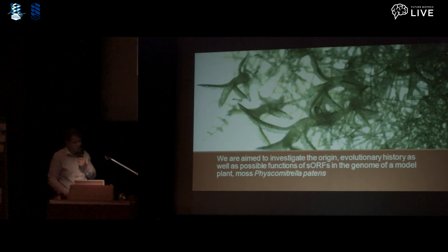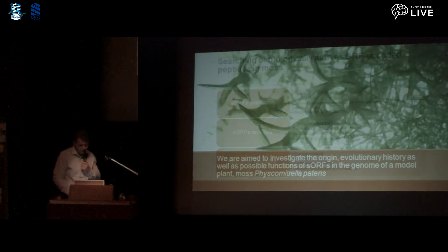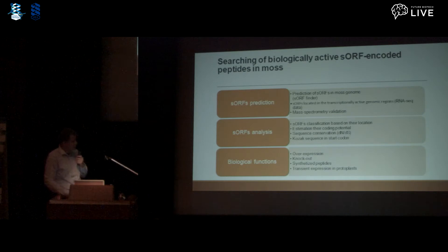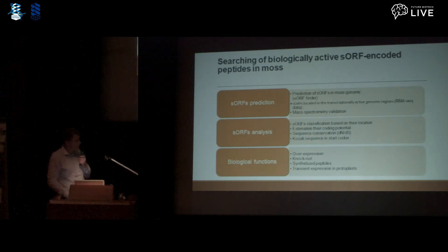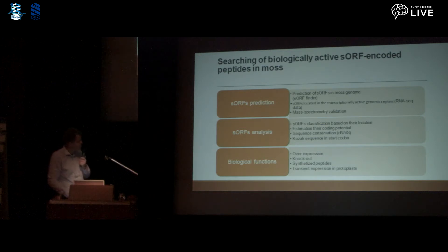Moss is a model object of modern plant biology and has some unique features suitable for this work. We developed an integrated pipeline which included transcriptomic, proteomic, and peptidomic data. First, we predicted sORFs in the moss genome, then classified the sORFs based on their location on transcripts. We estimated their coding potential, sequence conservation, and so on. To reveal biological functions of peptides encoded by sORFs, we used overexpression, knockout of sORF sequences, and some other techniques.